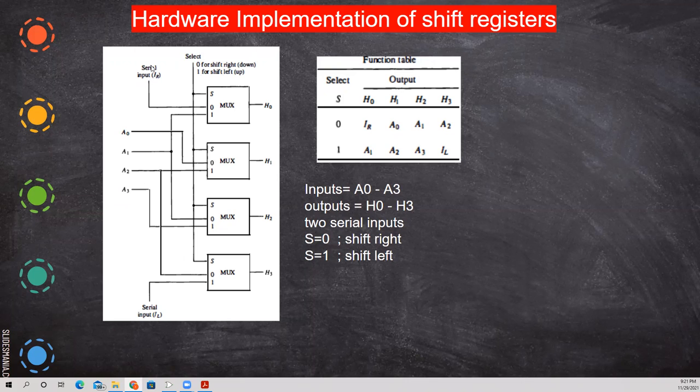Now when you give serial input and when it is zero, what happened? The data which are present in A0 is shifted down, which means it is equal to shifted right. When you keep the data here and then press one, then the data are shifted up, which is nothing but equal to shift left.